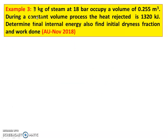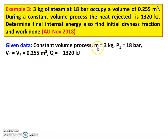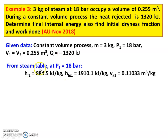Example number 3. Three kg of steam at 18 bar occupy a volume of 0.255 m³ during a constant volume process. The heat rejected is 1320 kJ. Determine the final internal energy, find the initial dryness fraction, and the work done. This is from the November 2018 question paper. Given: constant volume process; mass of steam M = 3 kg; P1 = 18 bar; V1 = V2 = 0.255 m³; heat rejected Q = −1320 kJ. From the steam table (saturated water table, Table 2) at P1 = 18 bar: HF1 = 881.5 kJ/kg; HFG1 = 1910.1 kJ/kg; VG1 = 0.11033 m³/kg.